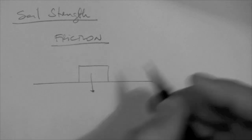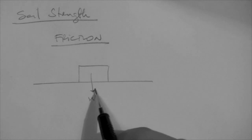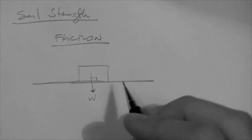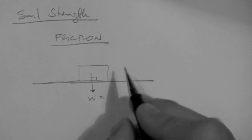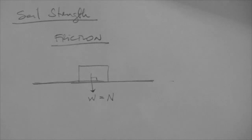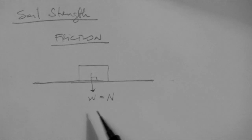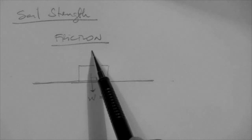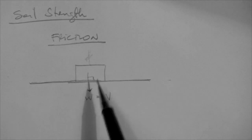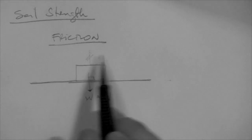This block has a weight, and therefore that weight, which is a force, acts normal — that is perpendicular — to the plane in question. So we call that the normal force. We could have another force, in which case the total normal force would be that force plus the weight. But here, the only force present is the weight; we don't have any additional force.